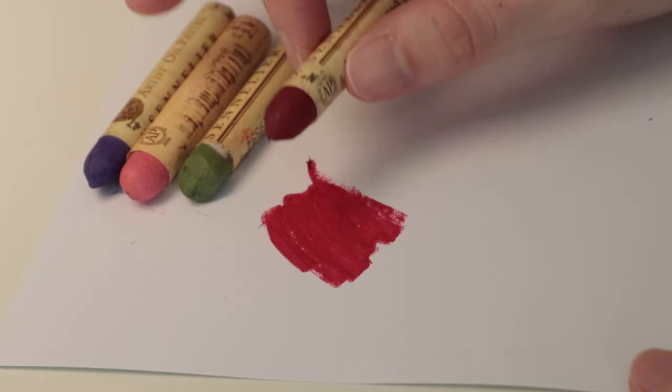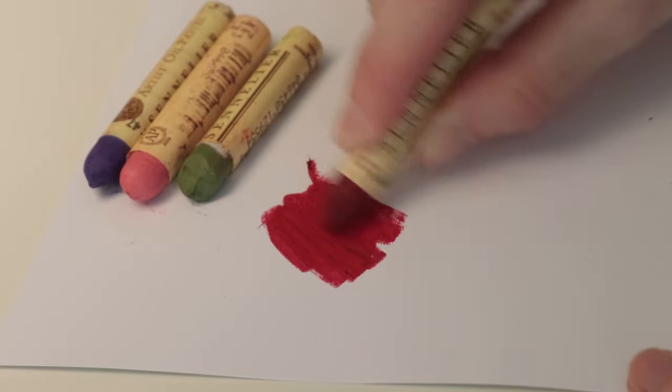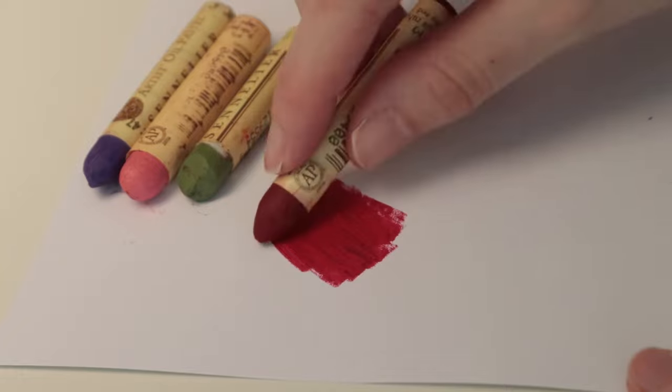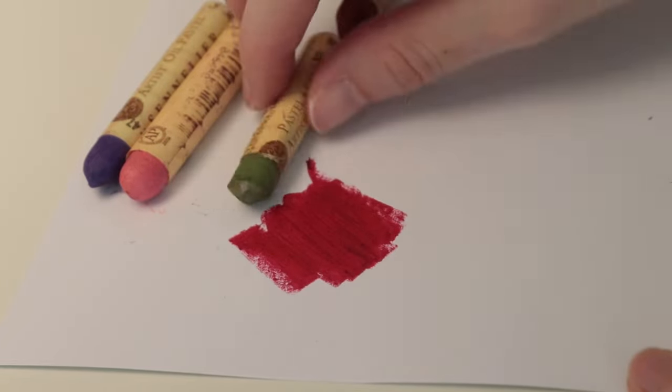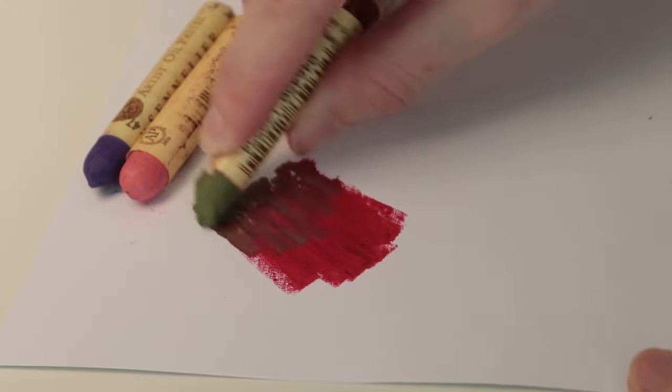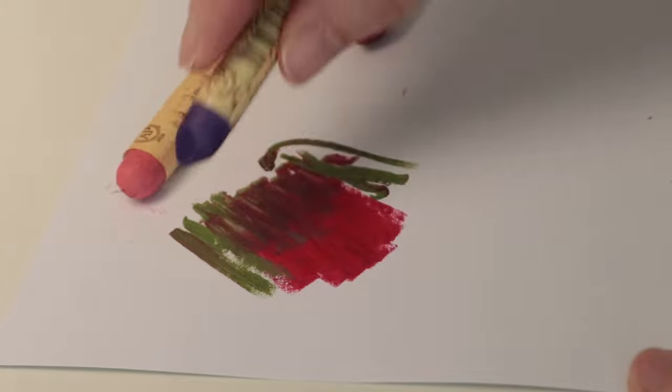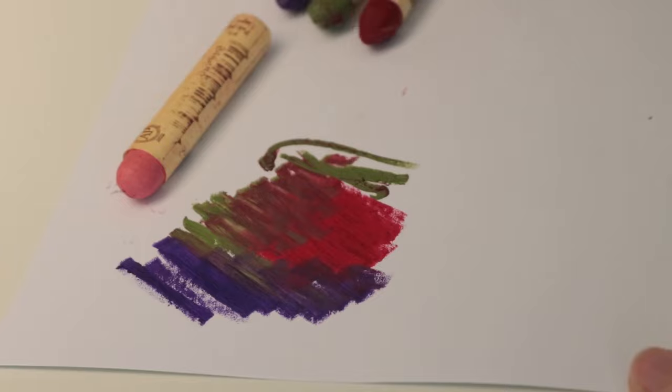I think these are the creamiest, although Paul Rubens is also quite soft. Yeah, I would say these are the creamiest. They are really nice, blend super easily. You don't have to make any effort. They blend really well, fingers or paper stamps, doesn't matter.